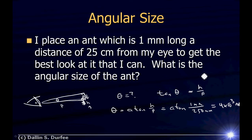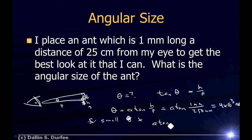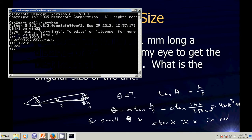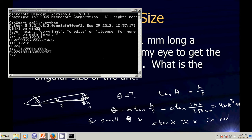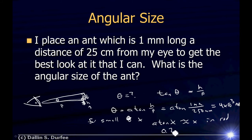For really small angles, the arctangent of a small number gives approximately that same number in radians. So for small x, arctangent of x is about equal to x in radians. If I want the angular size in degrees, I take 1 divided by 250 and multiply by 180 divided by pi, giving 0.229 degrees. That's what we mean by angular size — draw a triangle, here's my object, here's the distance, that's the angular size.